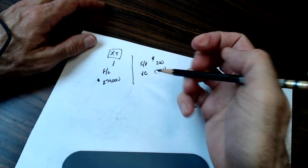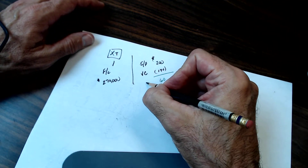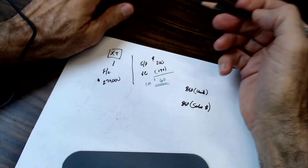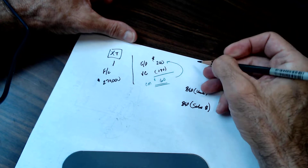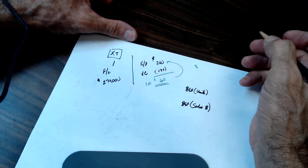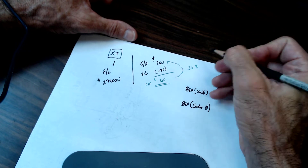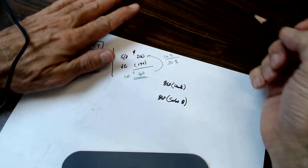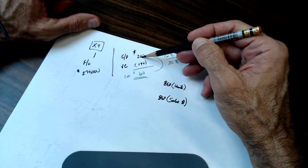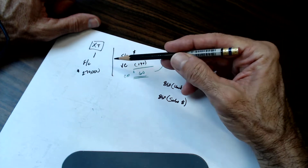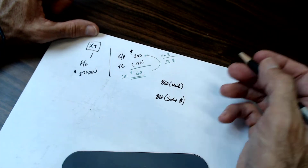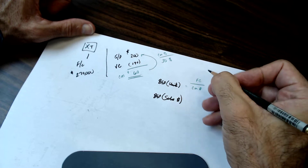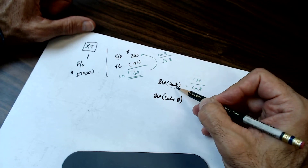First, let's compute the contribution margin per unit. We're making $60 a roll, so the contribution margin is $60 per roll. What percentage is that? 60 divided by 200 is 30% — that's the contribution margin ratio. Now applying the formulas: how many rolls do I need to sell, making $60 a piece, to cover my fixed costs? Remember the formula: fixed costs divided by contribution margin dollar amount gives you units.